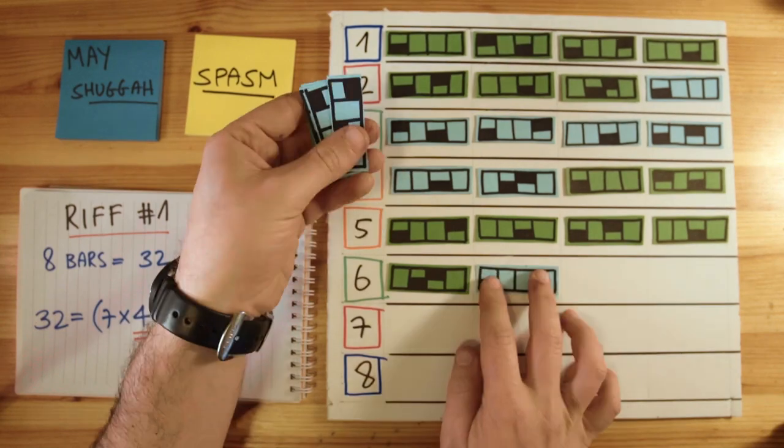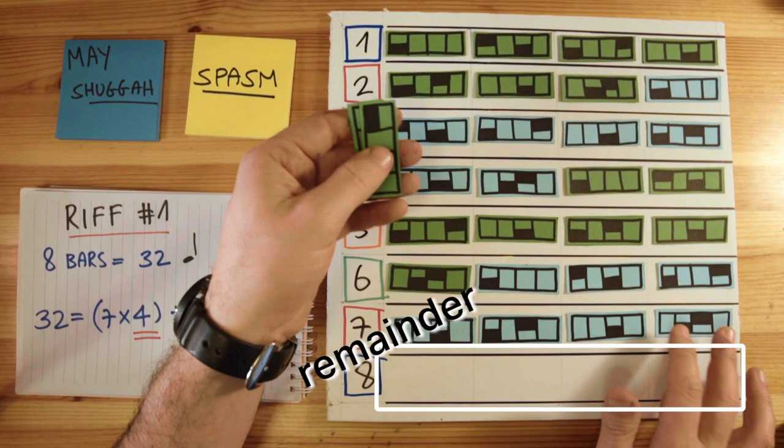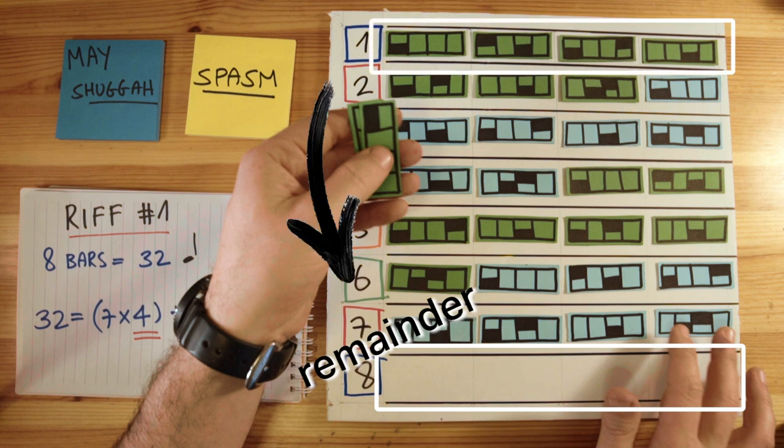Let's put that into my fancy thing. Fast forward, fast forward. Oh, and by the way, for the remainder, we can just reuse the first four quarter notes of the pattern. Because, why not?